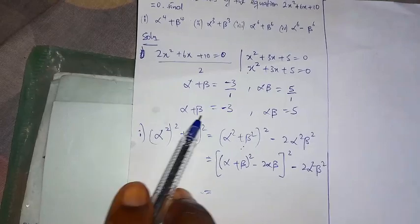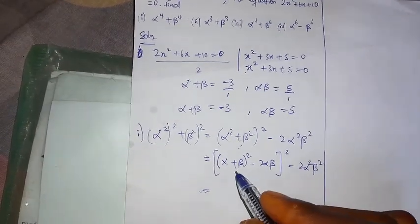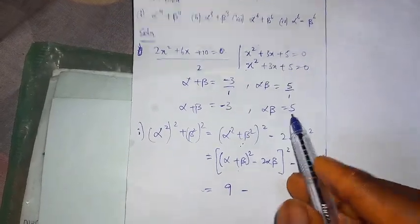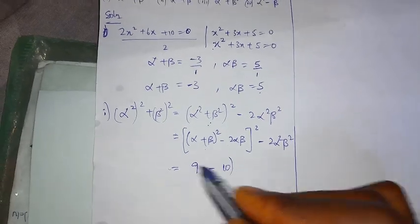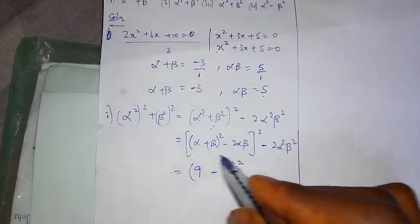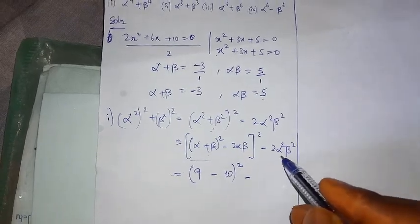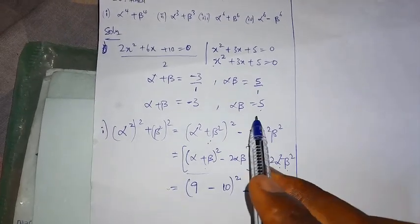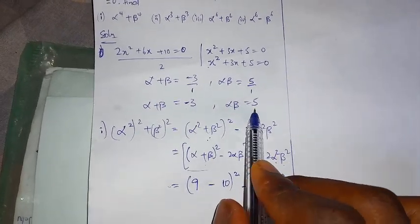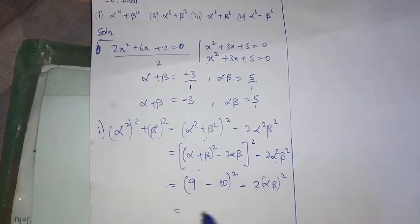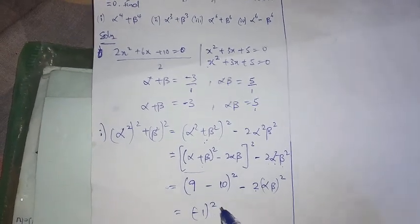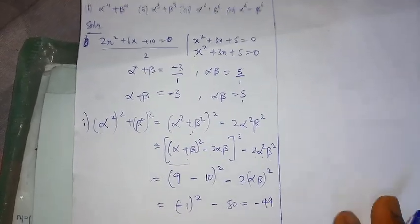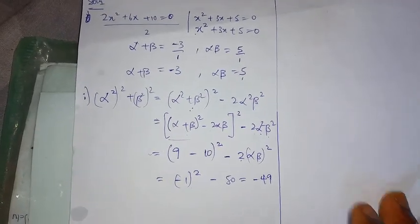Since alpha plus beta is minus 3, squaring gives 9. Minus 2·alpha·beta means minus 2 times 5, which is 10. So alpha² + beta² equals 9 minus 10 equals minus 1. Then squaring: (−1)² minus 2·(alpha·beta)² becomes 1 minus 2×25, which is 1 minus 50. My answer is minus 49.